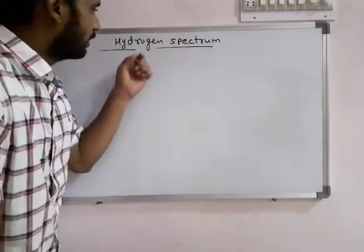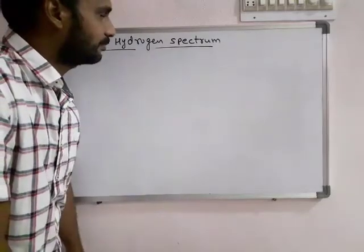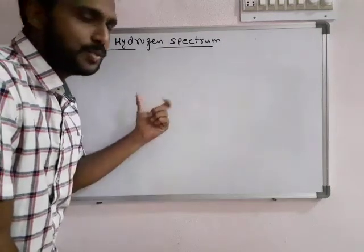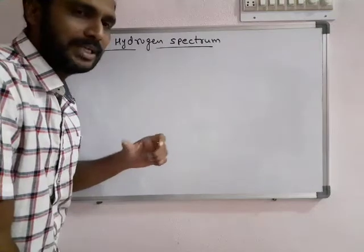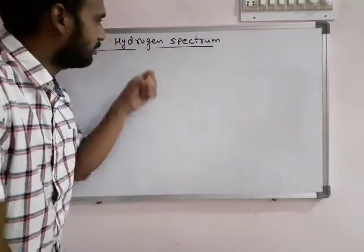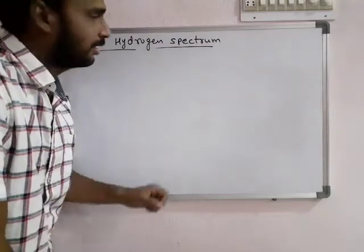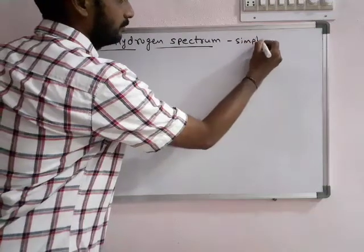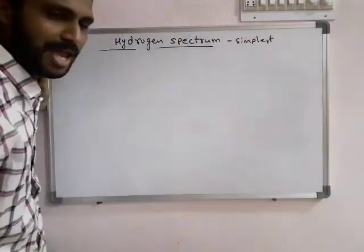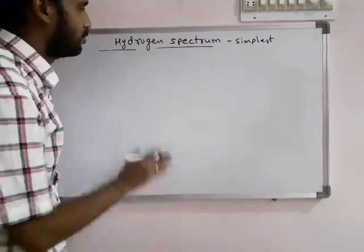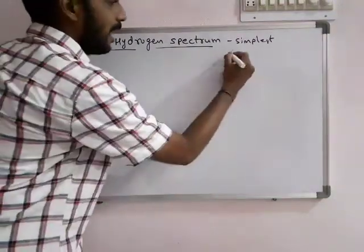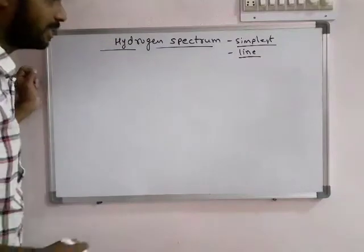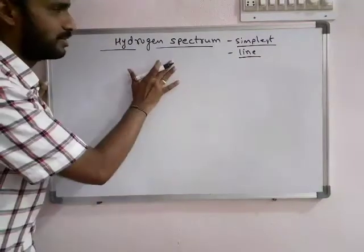Now we discuss the Hydrogen spectrum. We all know about the spectrum — what does spectrum of an element mean? It is nothing but a picture obtained from the radiations emitted by a particular element. The Hydrogen spectrum is treated as the simplest spectrum among all spectrums of different elements, and it is known to be a line spectrum. Now we see total details about the Hydrogen spectrum.